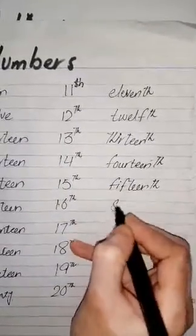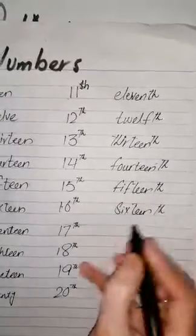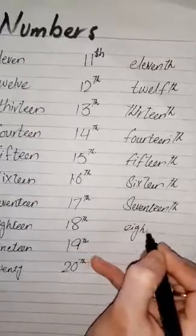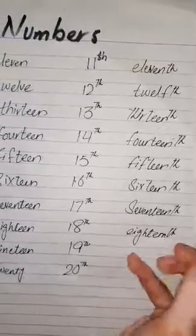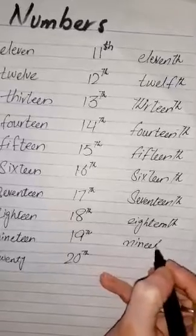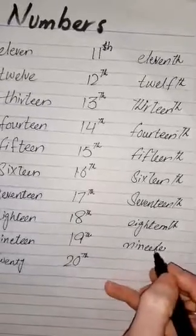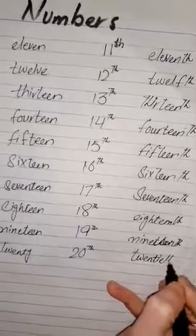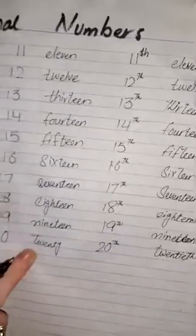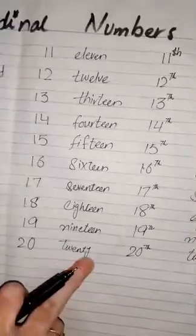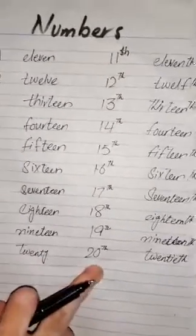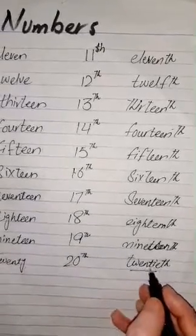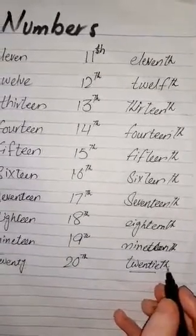Fifteenth, sixteenth, seventeenth, eighteenth, nineteenth, and twentieth. The spelling of 20 is T-W-E-N-T-Y because it is 20, but in ordinal numbers we use 20th, so the spelling of 20th is T-W-E-N-T-I-E-T-H, twentieth.